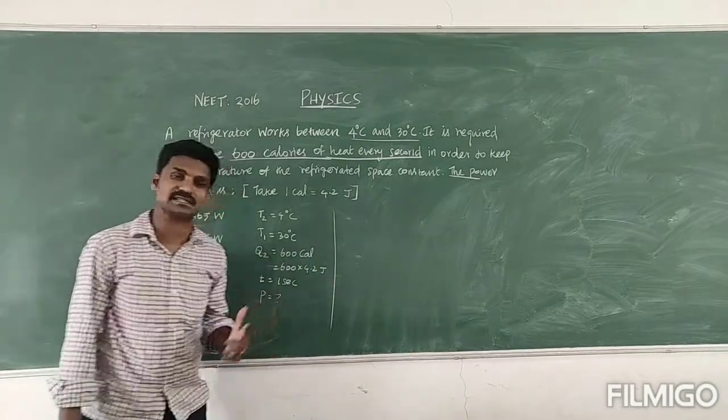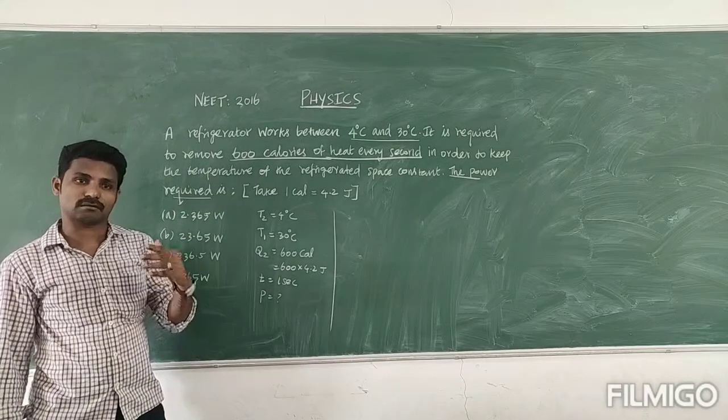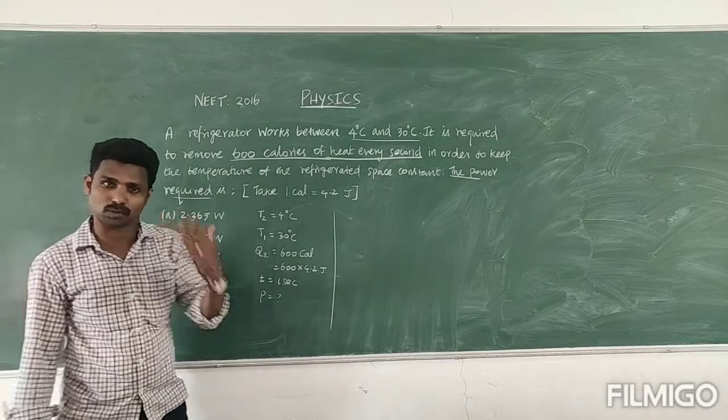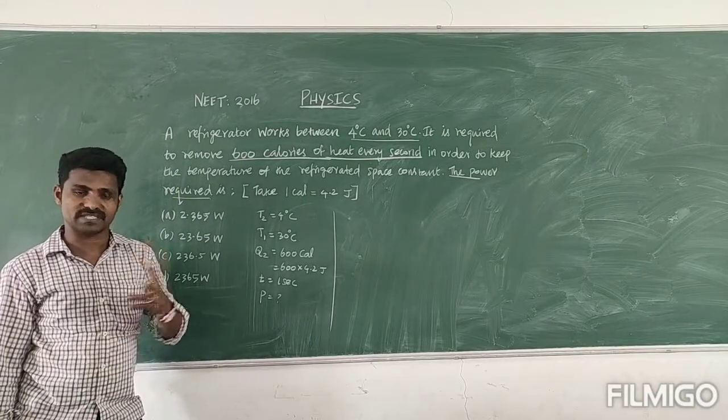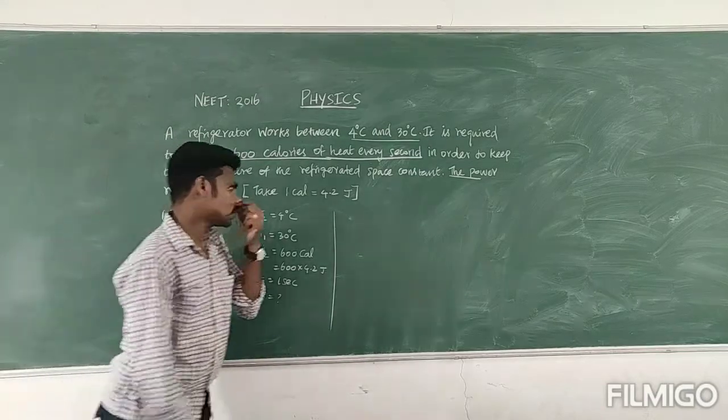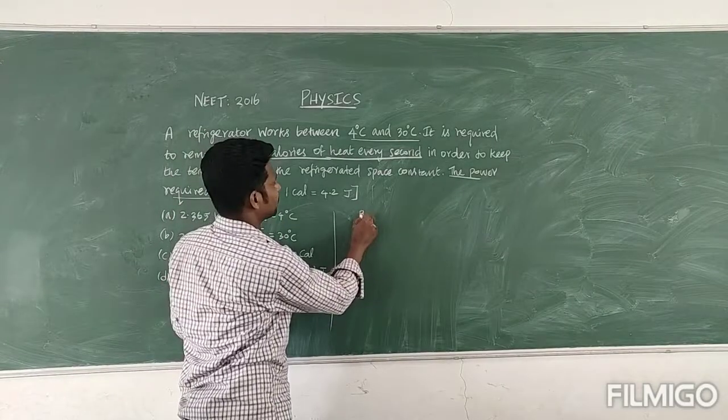So we know that in the refrigerator, the efficiency of the refrigerator, you know that one more way, that is the coefficient of the refrigerator. That is the meaning for efficiency of the refrigerator. So that is beta, that is represented by beta.